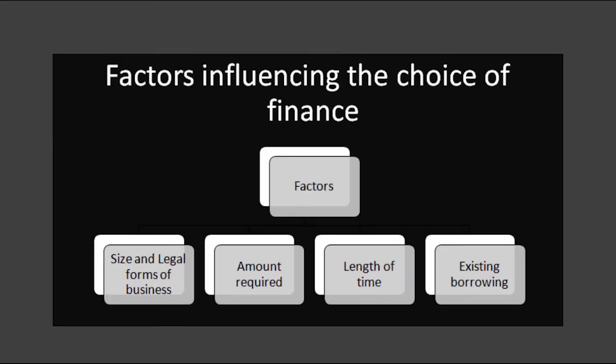Now we are at the last part of our lesson: factors influencing the choice of finance. We know the main sources of finance available to firms, but what factors do managers consider before deciding where to obtain finance from? There are four factors: size and legal form of the business, amount needed, length of time, and existing borrowing.